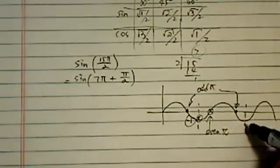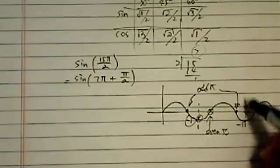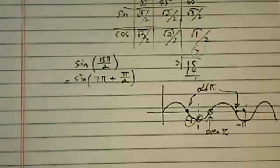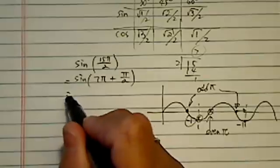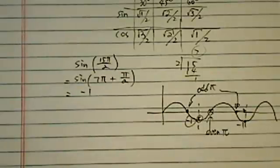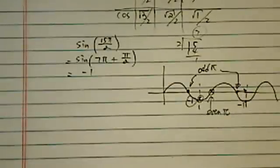Okay, same thing here. So every time you go odd π and then go π/2 over, it's minus 1. So that's one way you can see it's minus 1. Another way you can see this one is this.